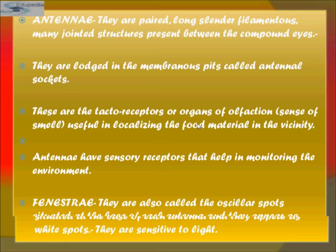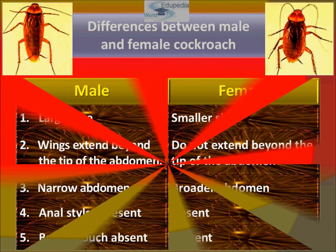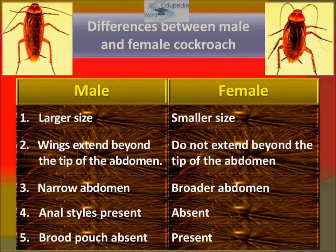The differences between male and female cockroaches: males are larger in size, females are slightly smaller. In males, wings extend beyond the tip of the abdomen; in females, they do not. Males have a narrower abdomen, while females have a broader abdomen. Anal styles are present in males but absent in females. Brood pouches or genital pouches are absent in males but present in females.